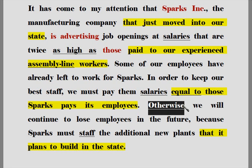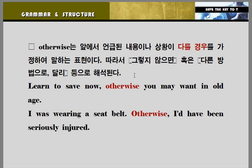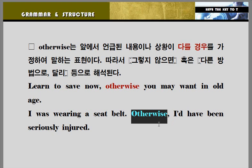'그래야만'의 구조로 이동하겠습니다. 'Otherwise'는 앞에서 언급된 내용이나 상황이 다를 경우를 가정하여 말하는 표현입니다. 따라서 '그렇지 않으면' 혹은 '다른 방법으로', '달리' 등으로 해석됩니다. 문장 보겠습니다. 'Learn to save now.' 지금 절약하는 것을 배우라. 'Otherwise' — 그렇지 않으면, 지금 배우지 않으면, 'you may want in old age.' 나이가 들었을 때 궁핍하게 될지도 모른다. 두 번째 문장입니다. 'I was wearing a seatbelt.' 나는 안전벨트를 매고 있었다. 'Otherwise' — 그렇지 않았더라면, 안전벨트를 매고 있지 않았었더라면, 'I'd have been seriously injured.' 나는 심각하게 부상을 당했을지도 모른다. 다시 한번 확인해 두시기 바랍니다. '그렇지 않으면', 혹은 '다른 방법으로', '달리' 등으로 해석하시면 됩니다.